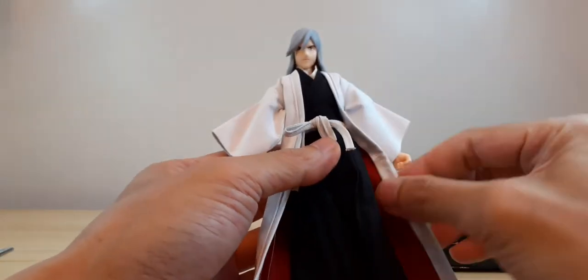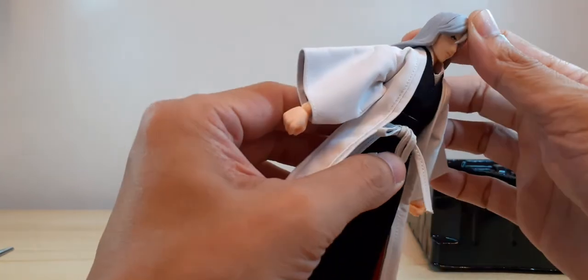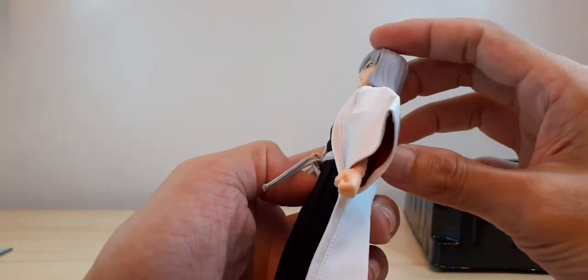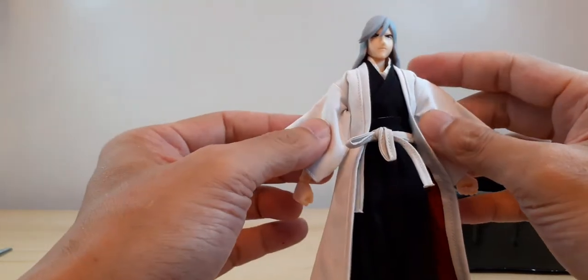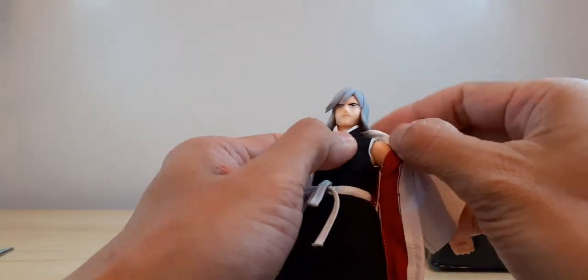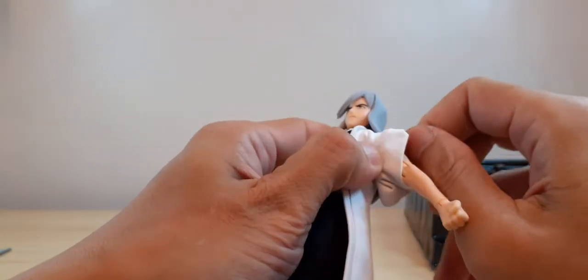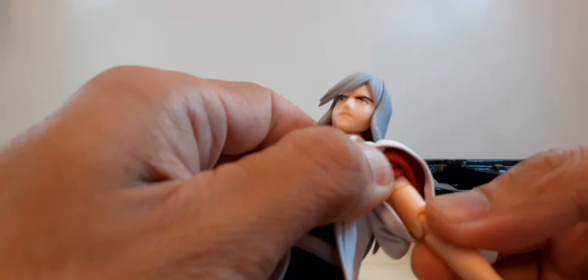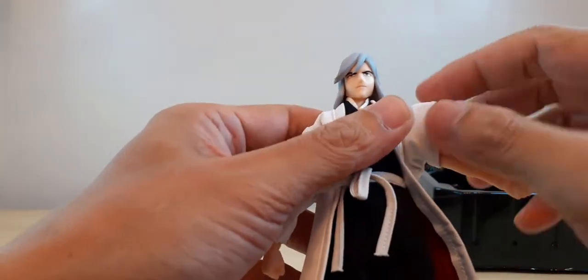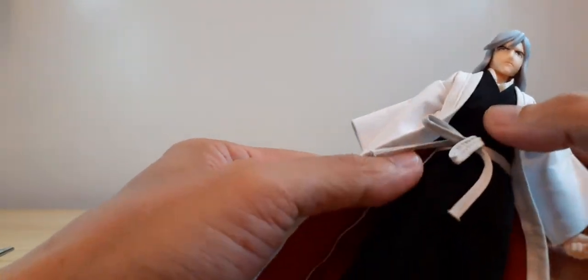So for our articulation, he can move down but that's about it. Can't look up much because of the long hair at the back. And we've got our usual butterfly joints, a swivel in the arm, double joint elbow, and movement at the waist but limited due to the soft goods.